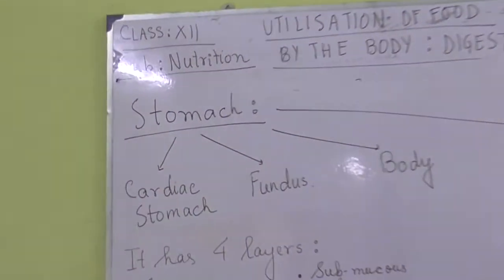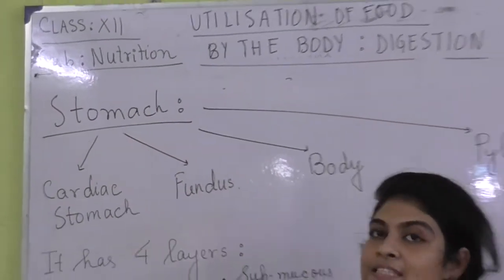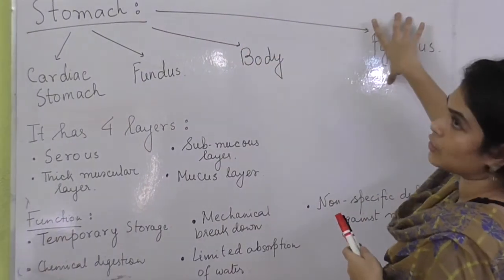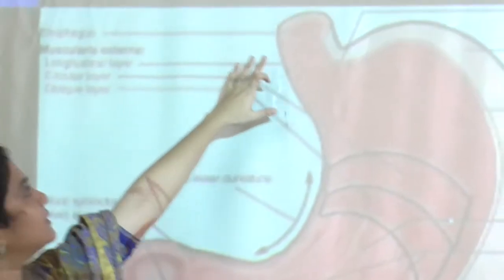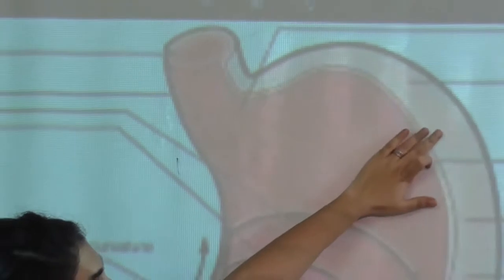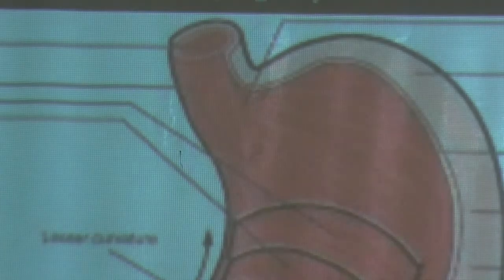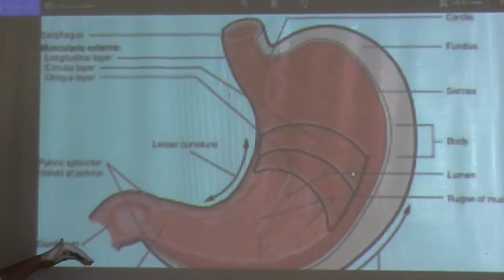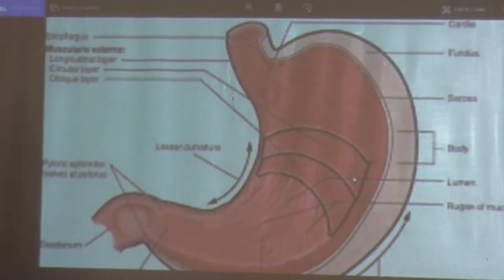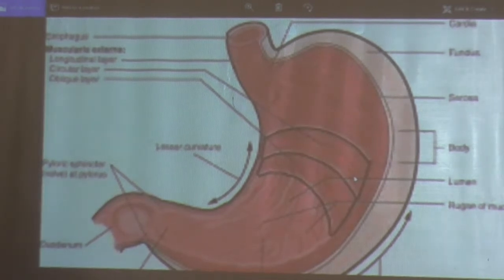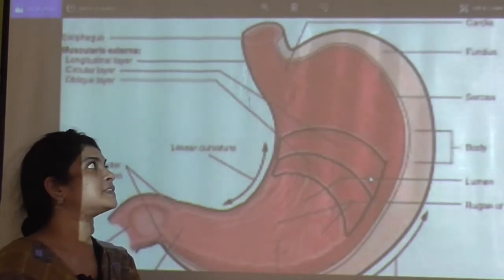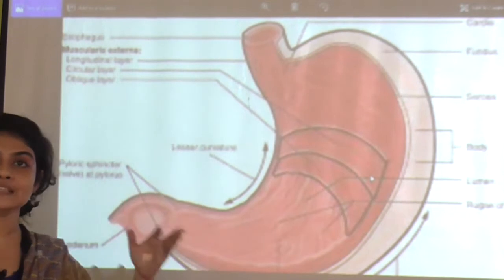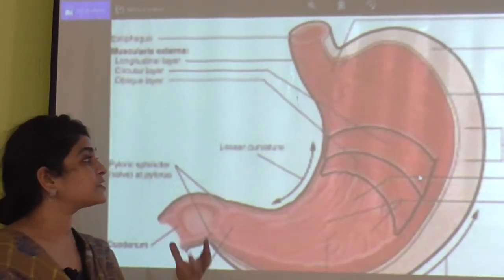Now we are coming to one of the most important organs of the digestive system — the stomach. The stomach basically has four parts: the cardiac stomach, the fundus, the body, and the pylorus. The pylorus connects to the next organ — the small intestine, specifically the duodenum. The stomach is lined by gastric glands which release gastric juices.